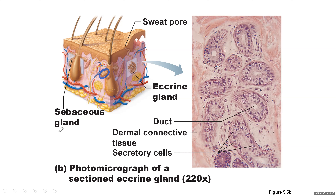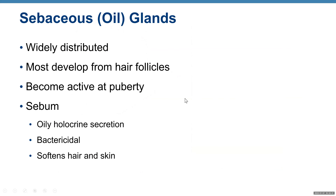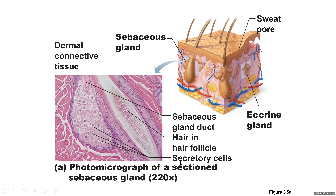Sebaceous or oil glands release sebum inside the hair follicle. They are widely distributed, most develop from hair follicles, become active at puberty, and produce sebum — an oily, holocrine secretion that is bactericidal and softens hair and skin. On the diagram you can see hair inside the hair follicle and the sebaceous gland right there, with secretory cells. They look a lot like adipose tissue, but your glands are made of epithelial tissue filled with sebum — that's why they look similar to adipose tissue, but remember it's still epithelial tissue.